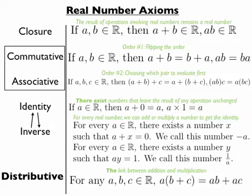The identity axiom is that there exist numbers that leave the result of any operation unchanged. For example, for any real number a, then we have a number 0 which a plus 0 is equal to a, and there exists a number 1 such that any number times 1 will equal that number, a times 1 is equal to a.